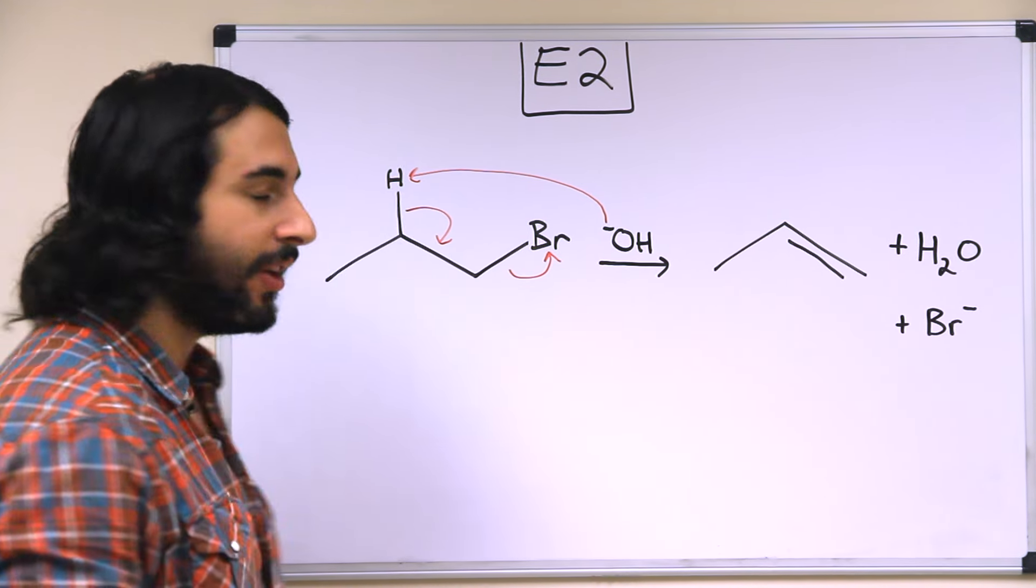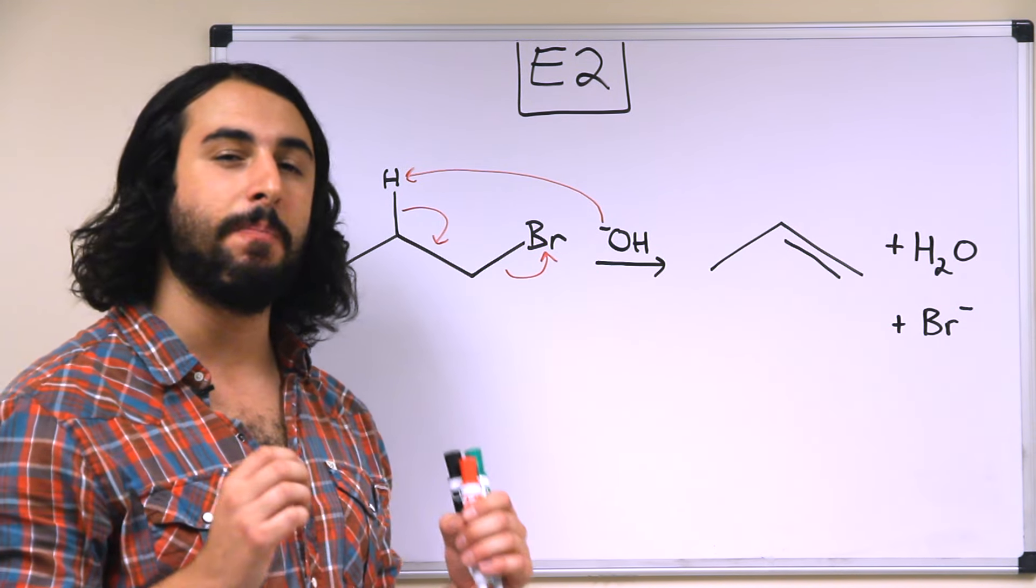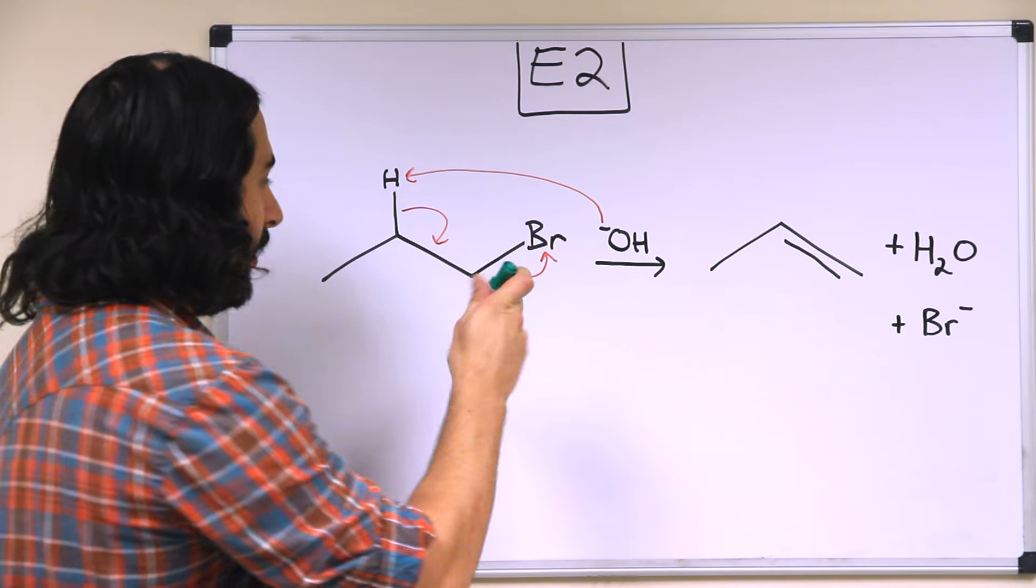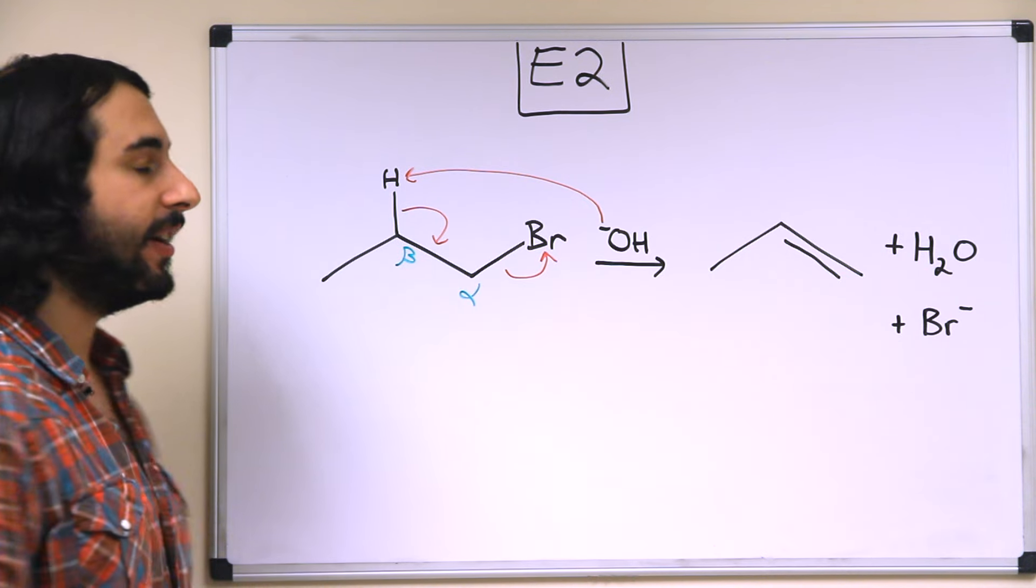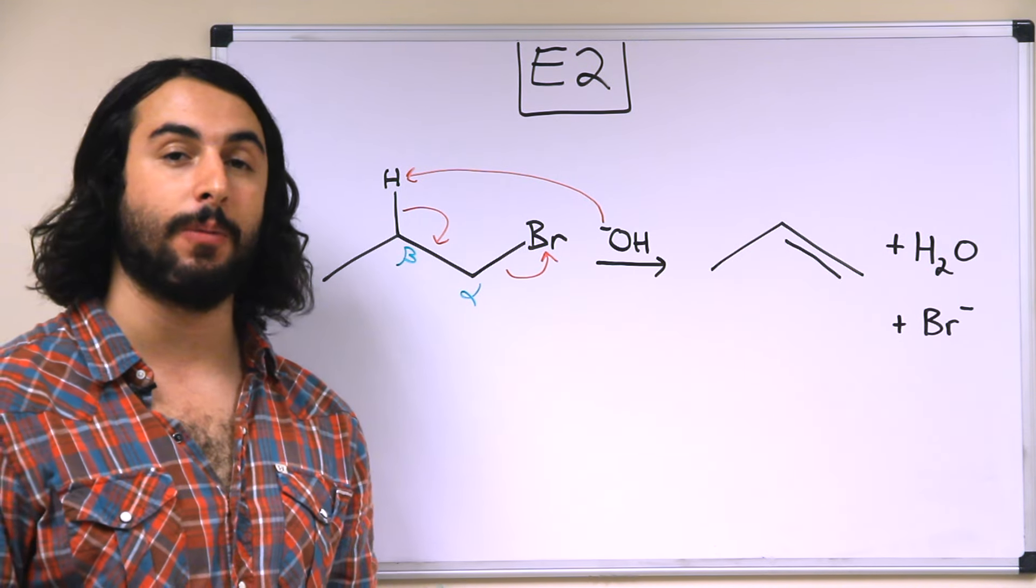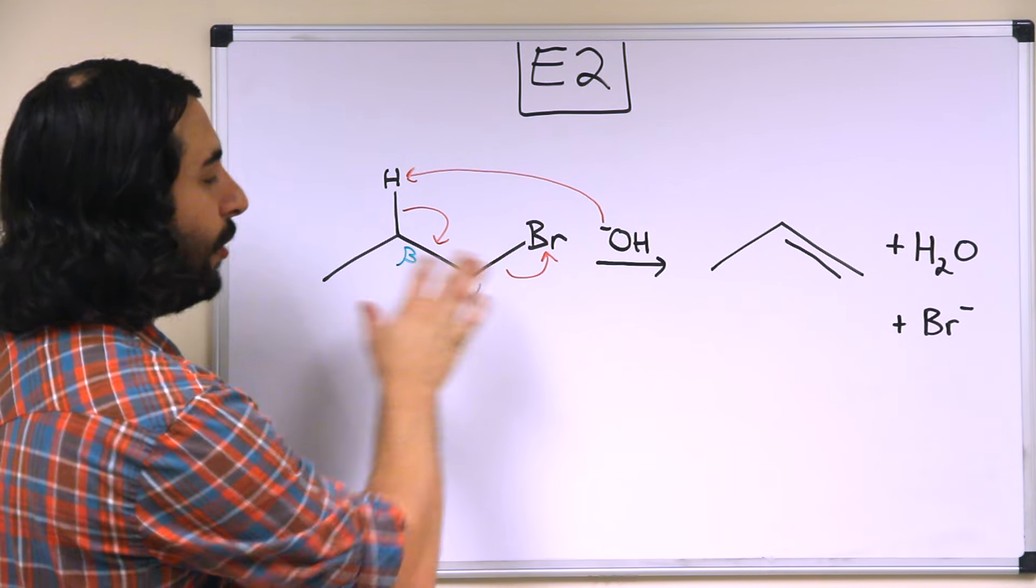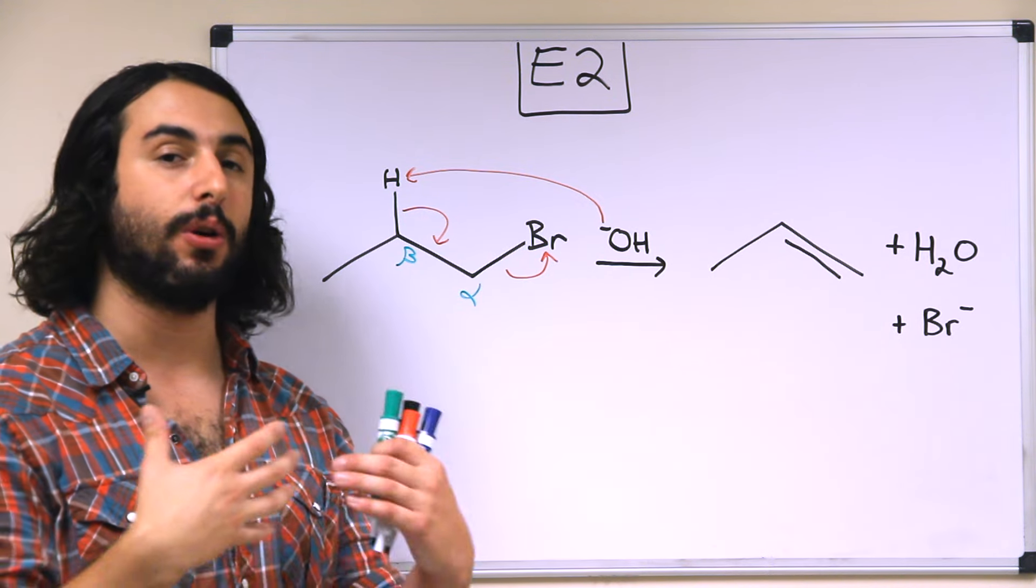And so basically one thing that is very important to keep in mind in an elimination reaction is that it is a beta elimination, meaning if this is the leaving group here, this is the alpha position, this is the beta position. It is a proton on the beta carbon that is removed, because it is not going to work out to remove a proton at the alpha position, because then those electrons will have nowhere to go.